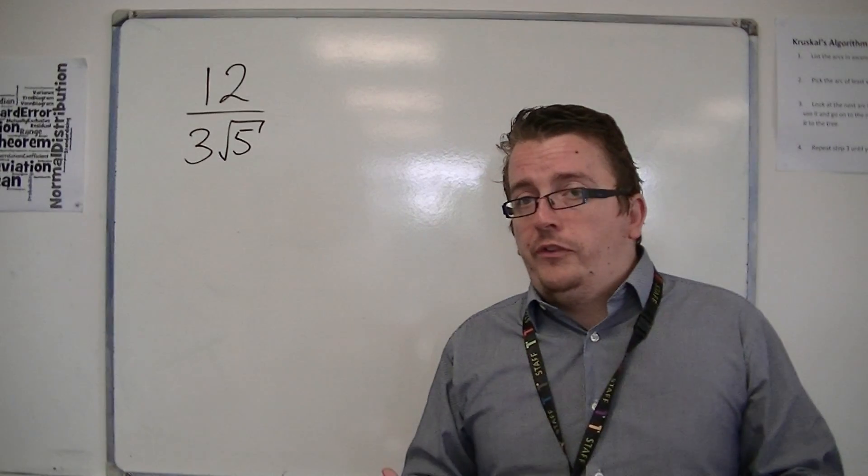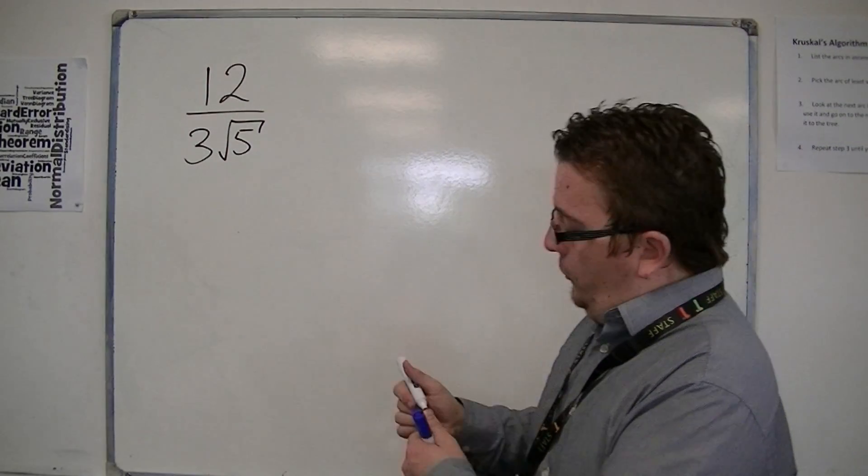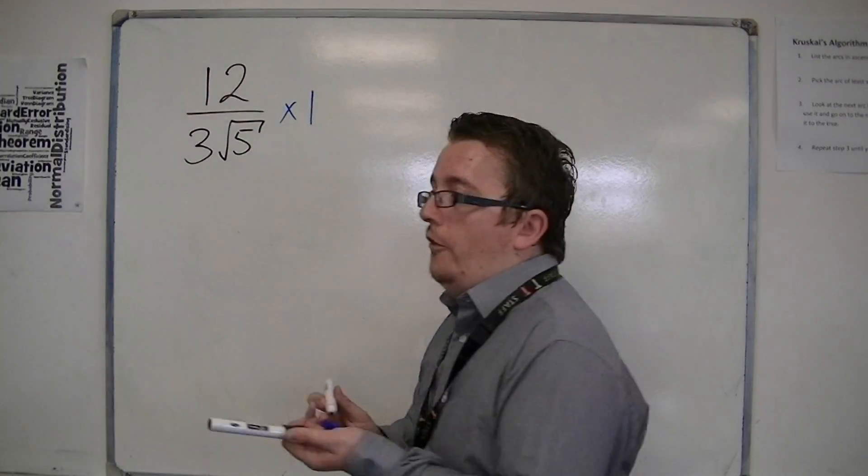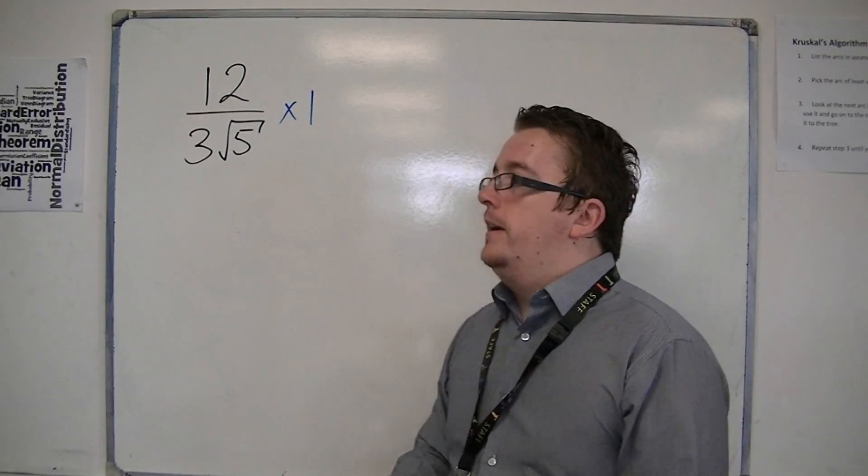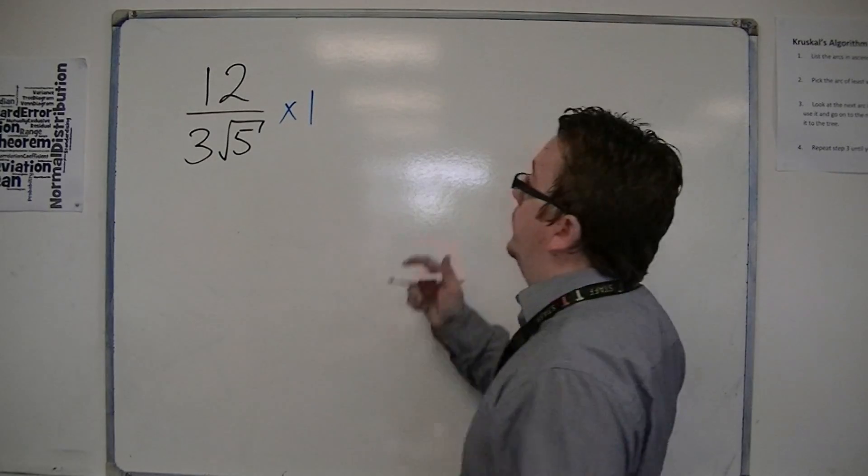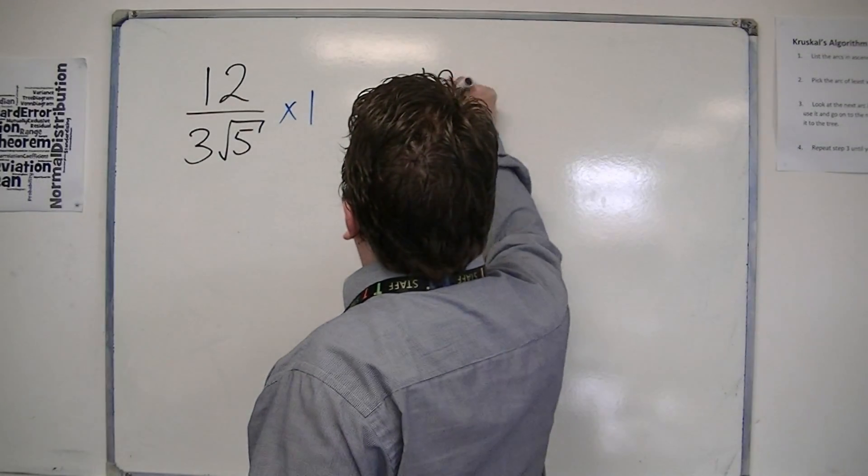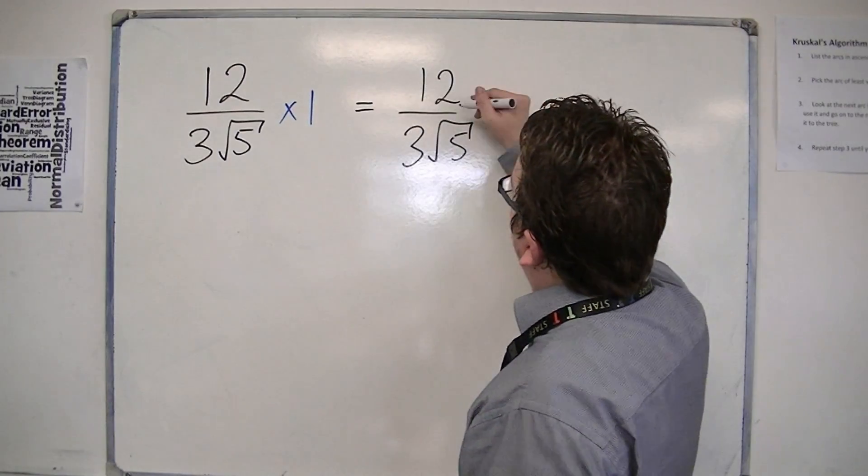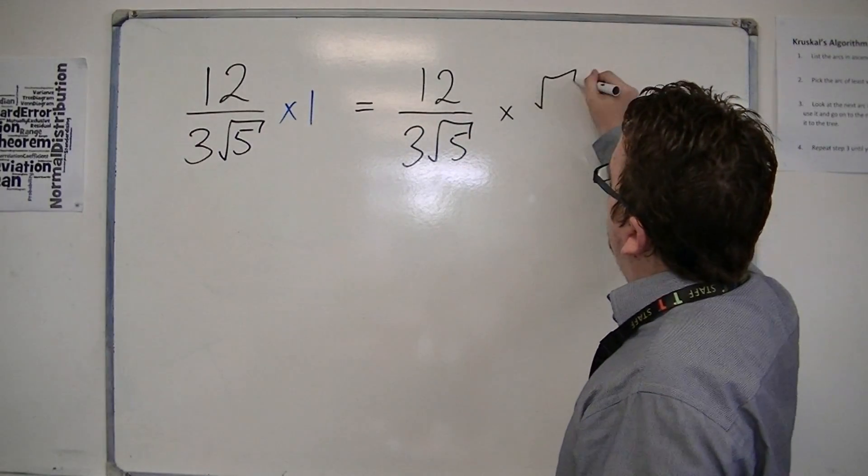Then, we're still going to use the same old trick. We're going to multiply this by 1. I'm going to choose what the 1 is going to look like to best simplify this. So, the way to do it is to multiply by root 5 over root 5.